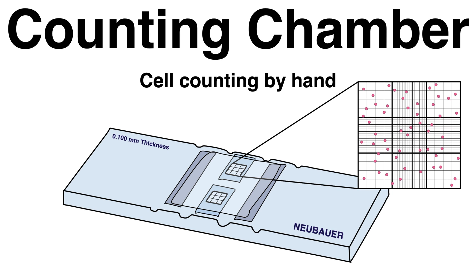The Neubauer counting chamber allows quick and simple determination of the number of cells in a solution. Besides more modern, automatic cell counting devices, this rather traditional way of counting cells by hand is still a widely used technique to estimate the cell count.